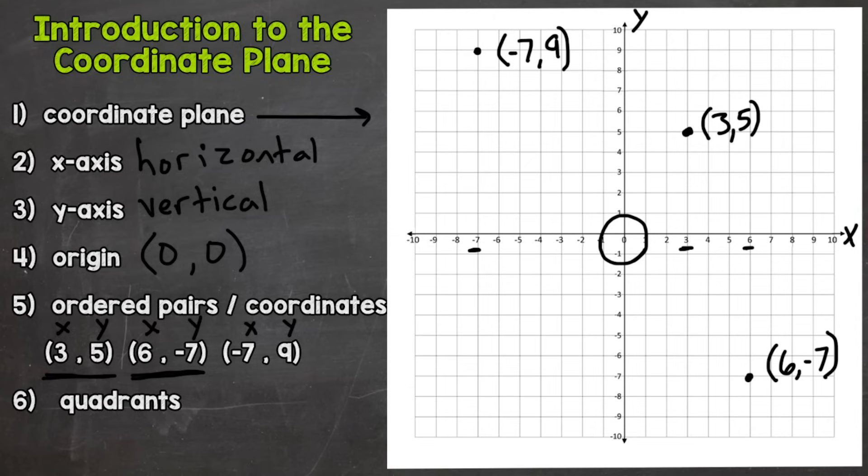Lastly, we have quadrants. If you look at your coordinate plane, you'll notice we have four sections: top right, top left, bottom left, bottom right. This (3, 5) right here in the top fourth—this is considered quadrant I. I'm going to use Roman numerals. Now, jumping to the left where (-7, 9) is, this is considered quadrant II. So (-7, 9) is plotted in quadrant II.